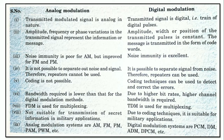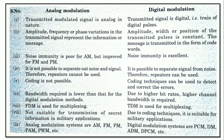In analog modulation, the transmitted modulated signal is analog in nature, whereas in digital modulation the transmitted signal is digital — that is, a train of digital pulses. In analog modulation, the amplitude, frequency, or phase variations in the transmitted signal represent the information or message.